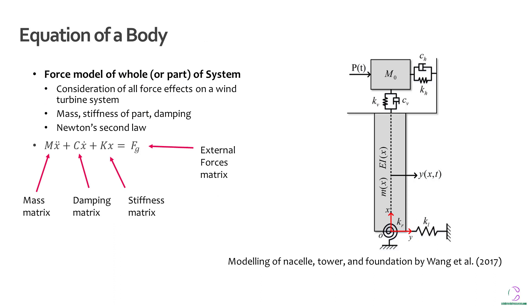Basically, damping has to do with the forces which are opposing the motion of the wind turbine system. For example, if you had wind coming onto the blade, these damping forces slow down the effect being caused by this wind velocity. You can see here you have the mass matrix, the damping matrix, the stiffness matrix, as well as all of them equating to the external force matrix.